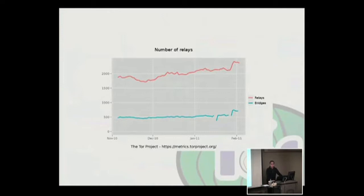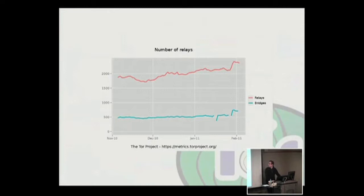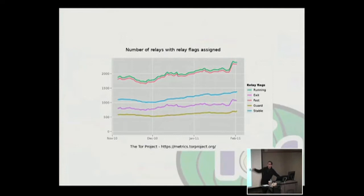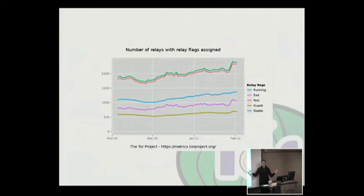The Egypt situation happening right now is really important. The number of relays around the time the unpleasantness started jumped from just over 2,000 to about 2,325 nodes in the network. The bridges also jumped — from a solid 500 to about 700 or more nodes. A bunch of people put up really fast exit nodes overnight, and those are actually useful for everyone in the whole world. When you have an anonymity network shared by everyone, it's not just the 'fed anonymity network.'